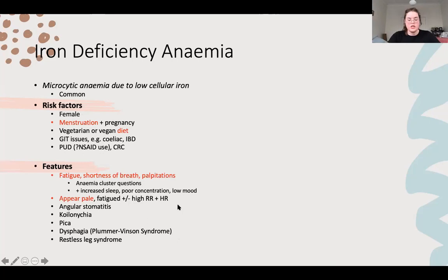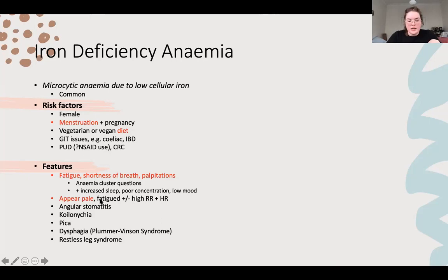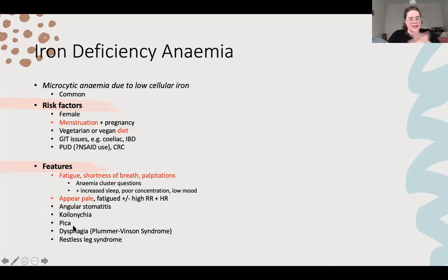Features: classic anaemia signs - low red blood cells causing fatigue, shortness of breath, palpitations. They look pale and can have tachycardia because they've got essentially lower oxygen. Key findings specific to iron deficiency anaemia: angular stomatitis, usually bilateral (unilateral would indicate an infection, endogenous causes will be bilateral). Koilonychia - spooning of the nails. Pica - wanting to eat things that aren't food. Restless leg syndrome as well.